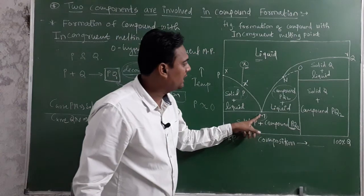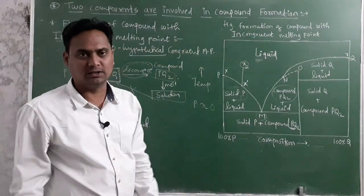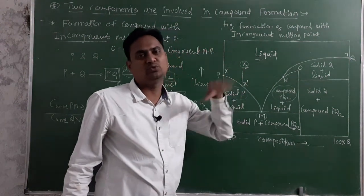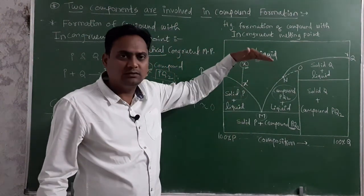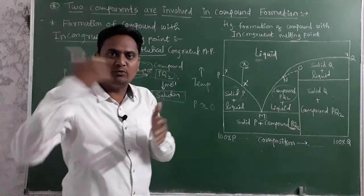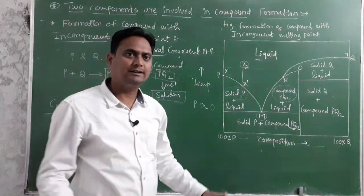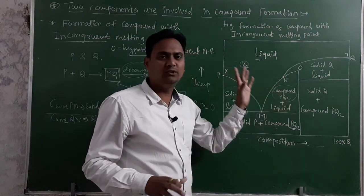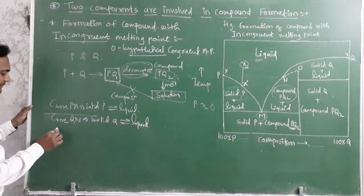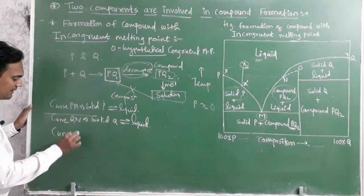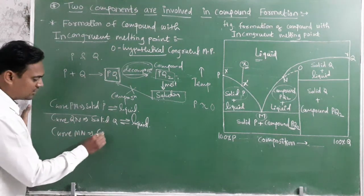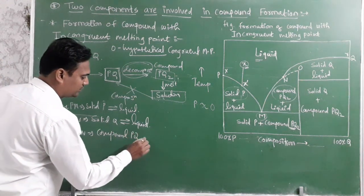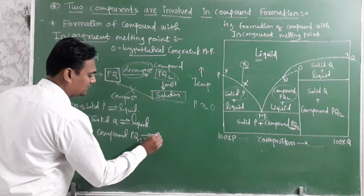Along curves MN, the expected congruent melting point would be point O, but we don't have that point in reality. At point N, the compound decomposes. Along curve MN, compound PQ2 is in equilibrium with the liquid.